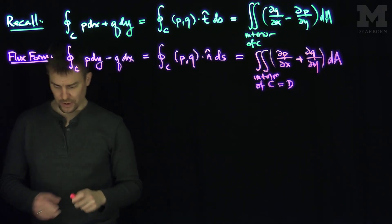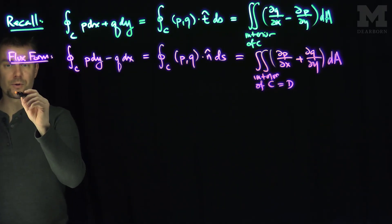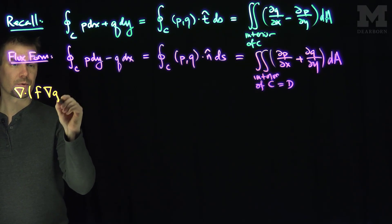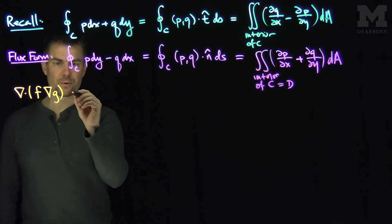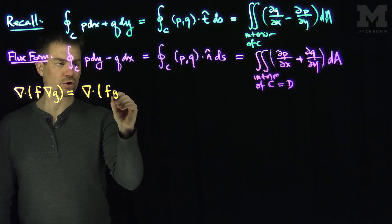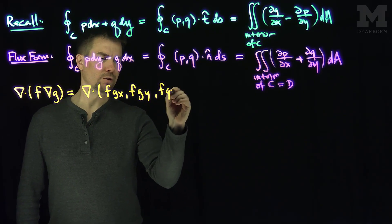So the next identity we're gonna need for this Green's first identity is the fact that if I do the divergence of f times the gradient of g, what will this be? Well, let's write this out term by term. This is gonna be the divergence of f gx, f gy, f gz.